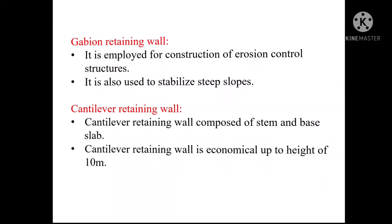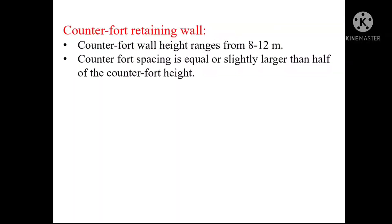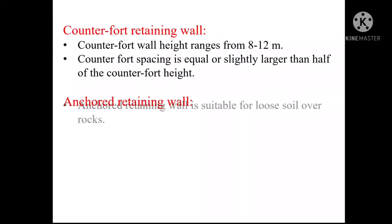The counterfort or buttress retaining wall is a cantilever retaining wall strengthened with counterforts monolithic with the back of the wall slab and base slab. Counterfort spacing is equal to or slightly larger than half of the counterfort height. Counterfort height ranges from 8 to 12 meters.